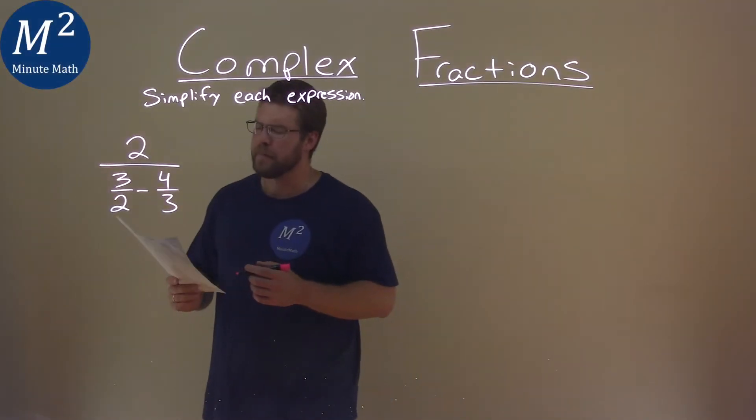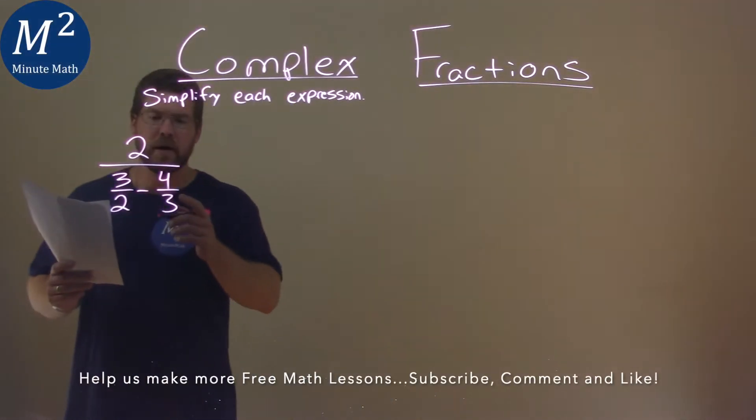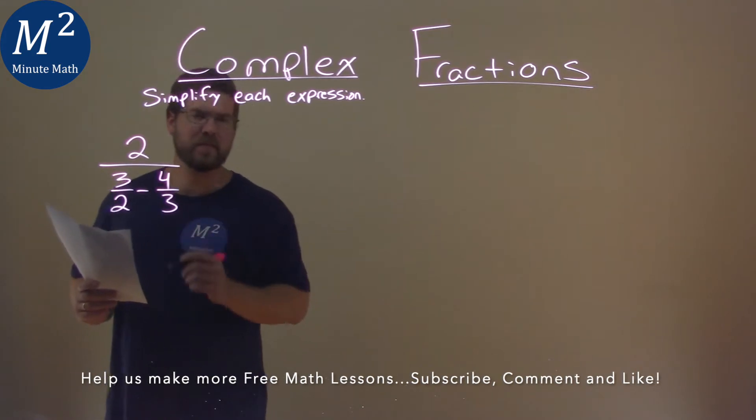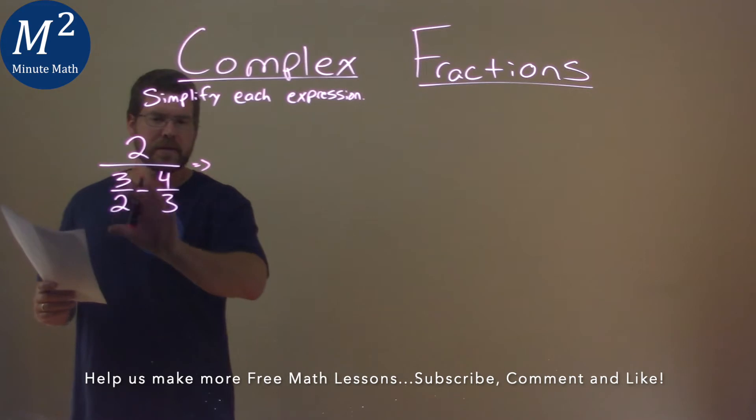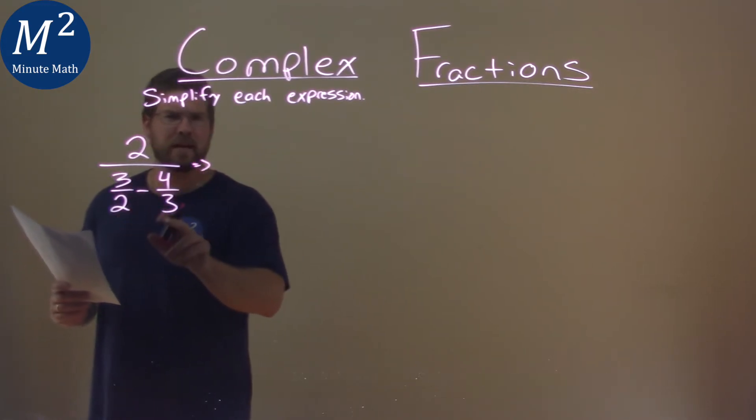We're given this problem: 2 over 3 halves minus 4 thirds, and we have to simplify this. The first thing I'm going to do is take this big denominator and find a common denominator for the second one.